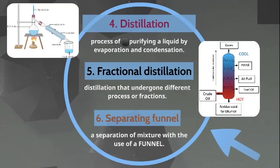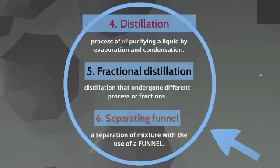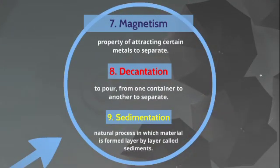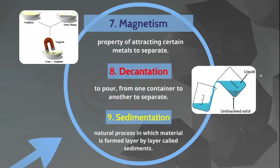Number five: fractional distillation — distillation that undergoes different processes or fractions. Number six: separating funnel — a separation of a mixture with the use of a funnel. Number seven: magnetism — the property of attracting certain metals to separate. Number eight: decantation — to pour from one container to another to separate.